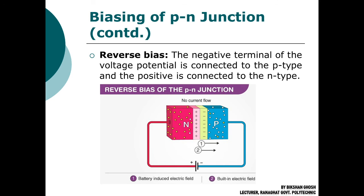In reverse bias, the positive terminal of the battery is connected to the N-side and the negative terminal to the P-side. Due to this, the inbuilt electric field and the applied electric field act in the same direction, so the potential barrier increases, producing a very high resistance path that resists current flow. This reverse bias condition is termed the 'off' state of the P-N junction — no current flows for an ideal diode, and only a very small leakage current flows for a practical diode.